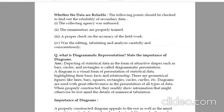Whether the data are reliable. The following points should be checked to find out the reliability of secondary data: the collecting agency by unbiased, the enumerators are properly trained, a proper check on the accuracy of the field work, and was the editing, tabulating and analysis carefully and consistently. Tabulating means construction of table; it should be well organized.